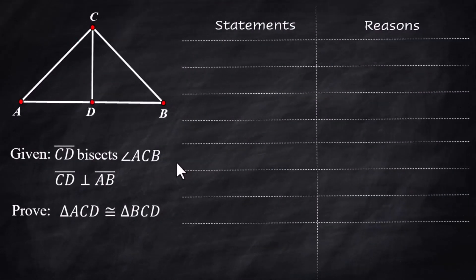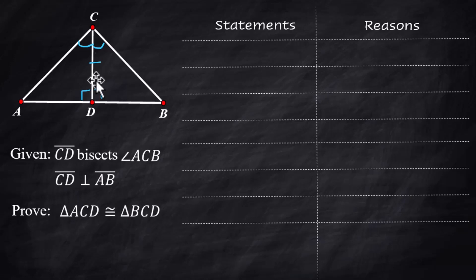Mark up your diagram: CD bisects angle ACB, so these two angles are congruent. The side they share is congruent, and the two angles down below are both 90 degrees, so those are congruent.